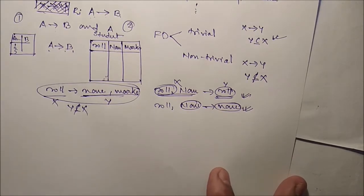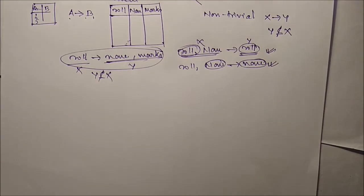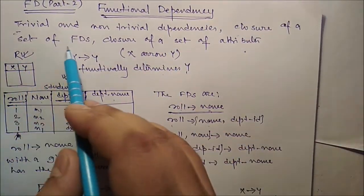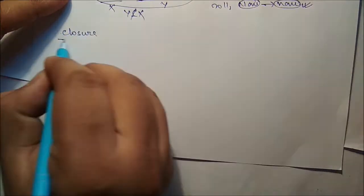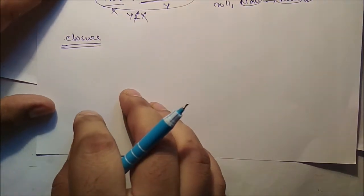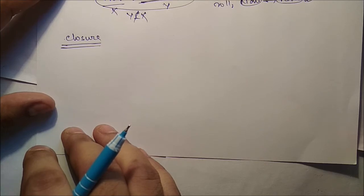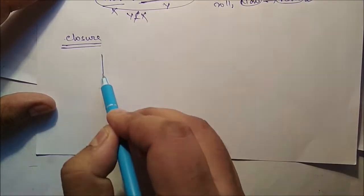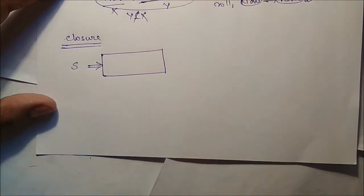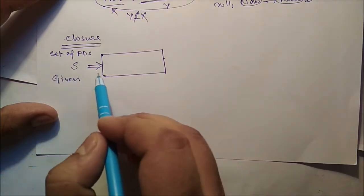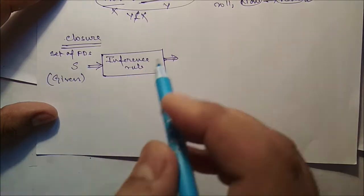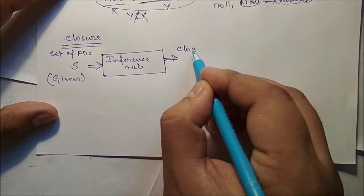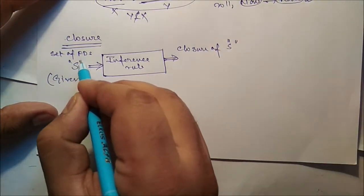Trivial dependencies are not very interesting in practice; we are usually more interested in non-trivial dependencies. Now, what is the closure of a set of FDs? The set of all FDs that are implied by a given set S of FDs is called the closure of S, written as S+. We have a given set of FDs S, apply inference rules to it, and we get the closure S+.